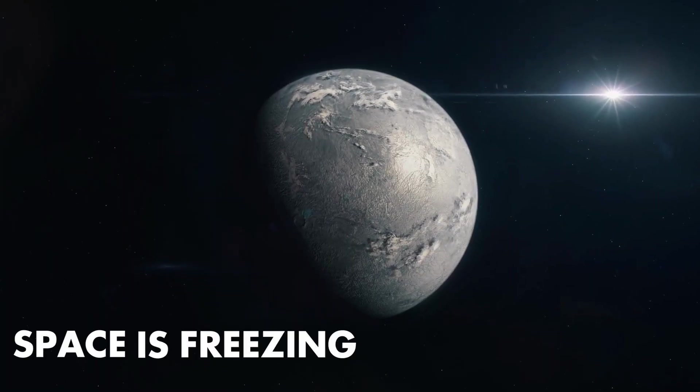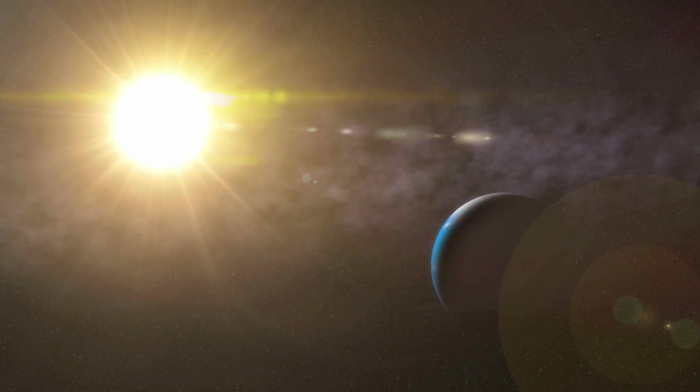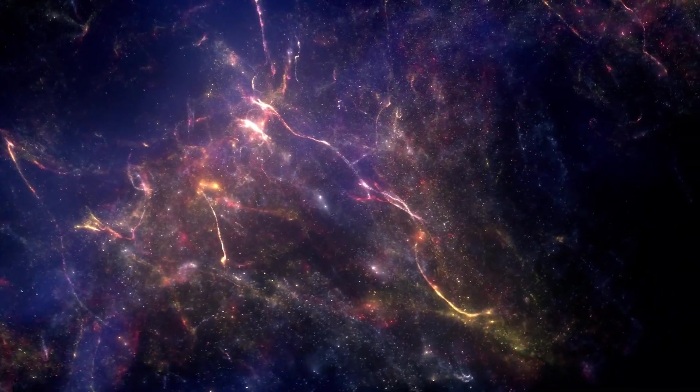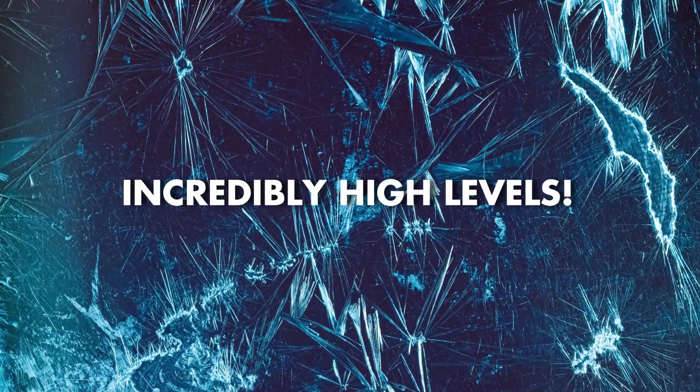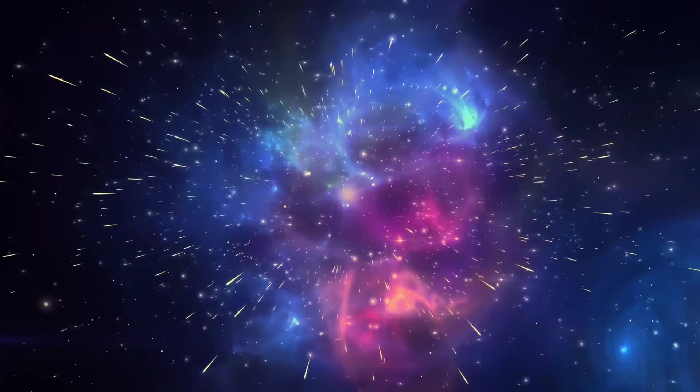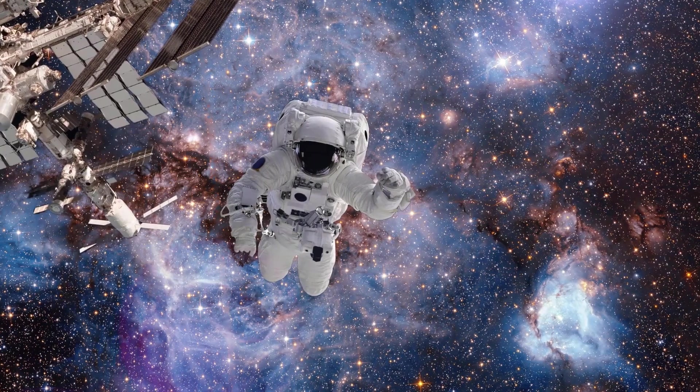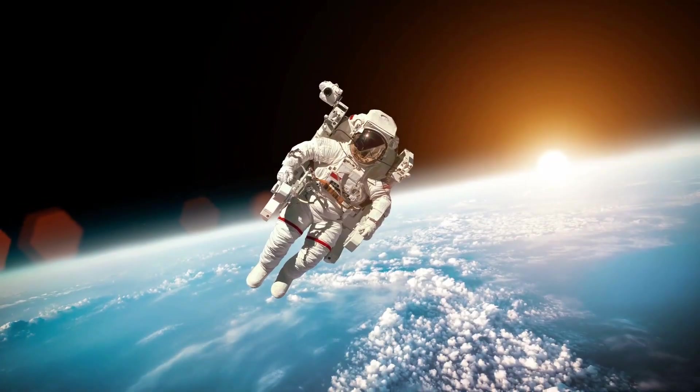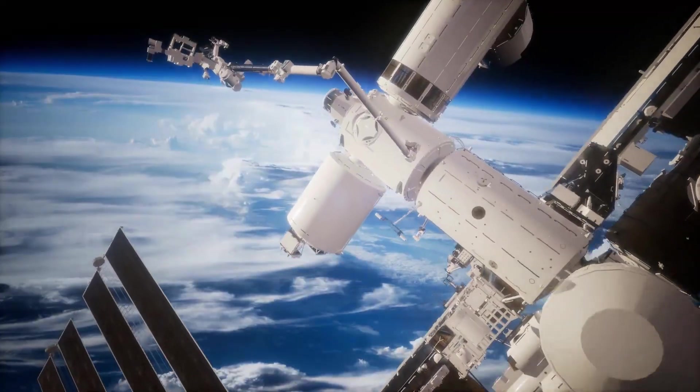Number 3. Space is Freezing Cold. The myth that space is freezing cold stems from the belief that the absence of air and the extreme distance from the sun would result in frigid temperatures. In areas exposed to direct sunlight, such as the vicinity of stars, temperatures can reach incredibly high levels. Conversely, in areas away from direct sunlight, such as the shadowed side of celestial bodies, temperatures can plummet to extreme lows. However, due to the vacuum, there is no air to conduct or convect heat, making it challenging to maintain a stable temperature. Well, I mean, does that kind of make sense? Let's see the next one.